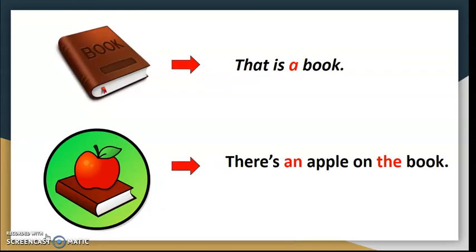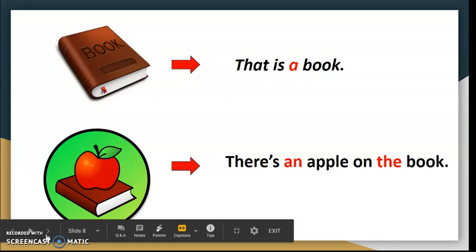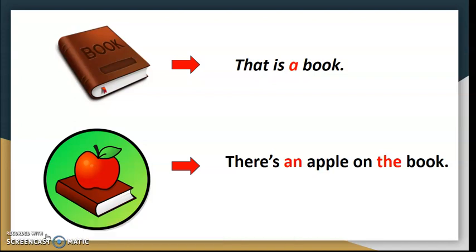Let's look at a few sentences where these three Article Brothers appear together. That is a book. There is an apple on the book. Articles A and An are used to introduce a singular noun: a book, an apple. Article The is used when we talk about the introduced noun the second time: the book.